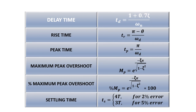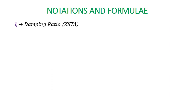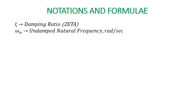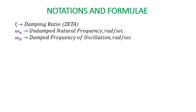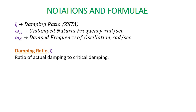Now we will see the parameters ζ, ωn, ωd, and θ incorporated in these formulas. Zeta (ζ) is the damping ratio. Omega_n (ωn) is the undamped natural frequency of oscillation, in radians per second. Omega_d (ωd) is the damped frequency of oscillation, also in radians per second.